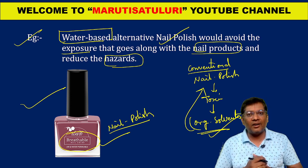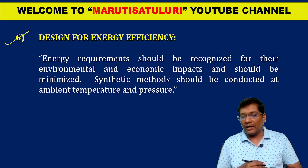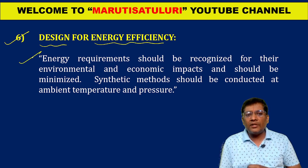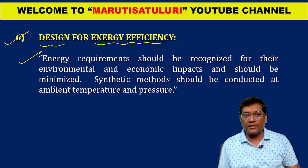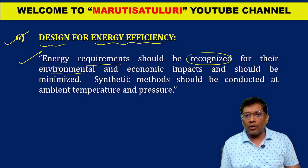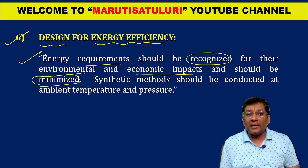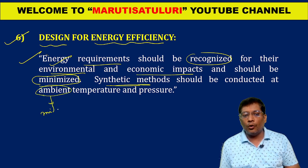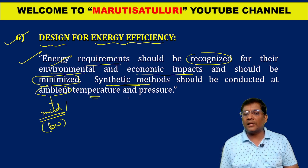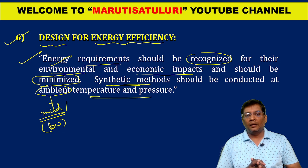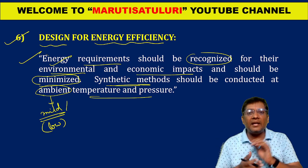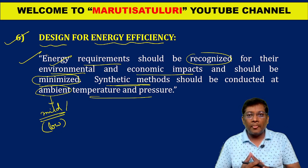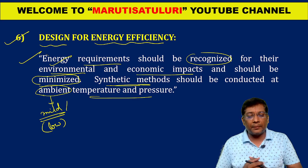Coming to the sixth principle: design for energy efficiency. The definition is: energy requirements should be recognized for their environmental and economic impacts and should be minimized. Synthetic methods should be carried out at ambient — meaning low or mild — temperatures and pressures only. For example, in the Haber's process for ammonia and the Contact method, high amounts of temperature and pressure are used — such high temperatures and pressures should be avoided in industrial processes.